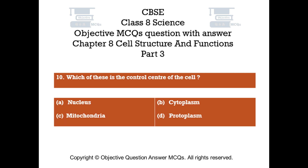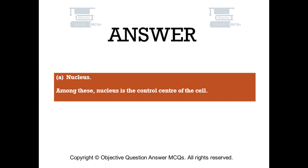Question number 10: Which of these is the control center of the cell? — Option A: Nucleus, Option B: Cytoplasm, Option C: Mitochondria, Option D: Protoplasm. The right answer is Option A: Nucleus. Among these, nucleus is the control center of the cell.